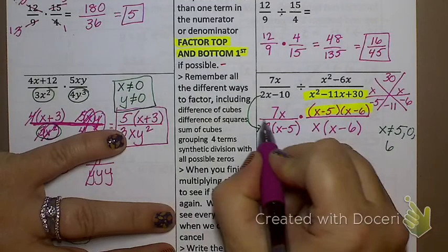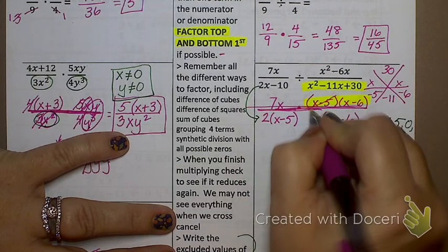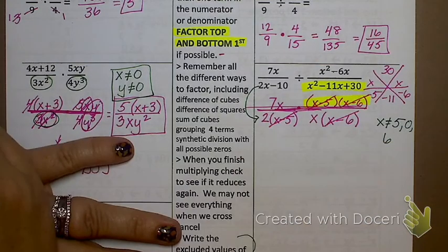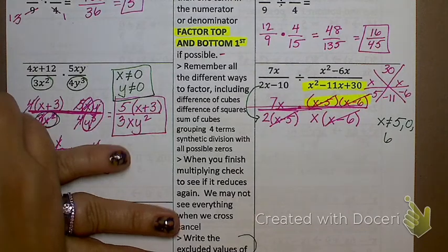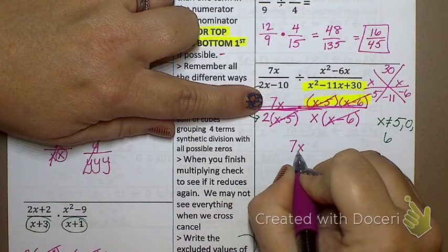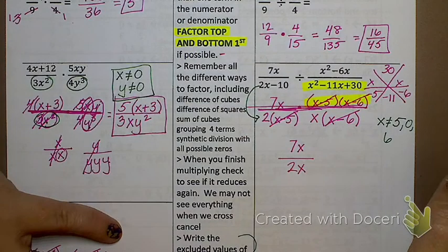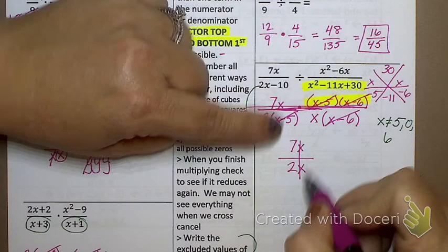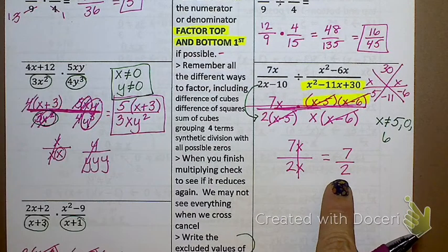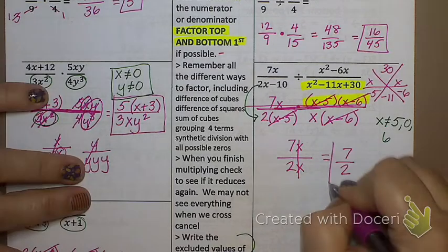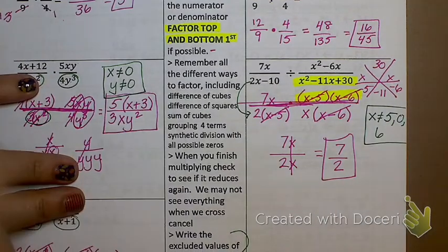All right. So I'm going to make my one giant fraction. And what can cancel? X minus 5. What else? Anything else? Some of you notice something that can cancel here, but if you don't notice, let me show you what's going to happen. What's left on top? 7X. And on the bottom? 2X. Hopefully you notice there that something else can cancel. So if you missed it up here, catch it down here. And what does that leave me with? 7 over 2. Is there any new excluded values? Not from a denominator of 2. So there's my answer. And there are my excluded values.